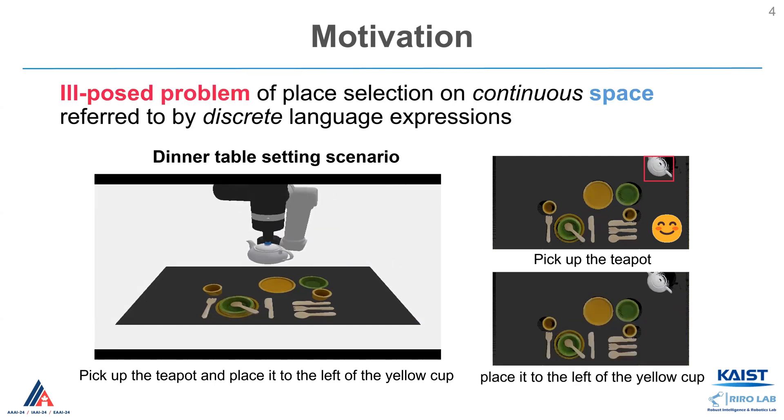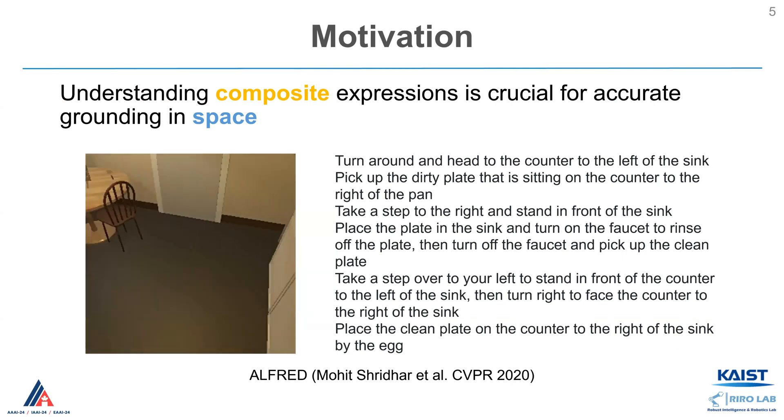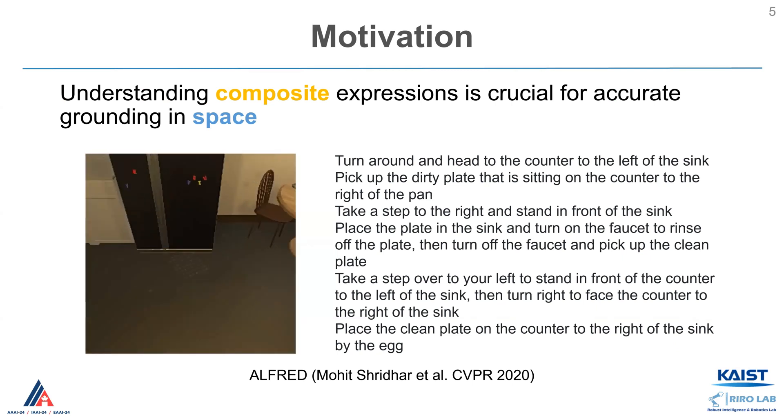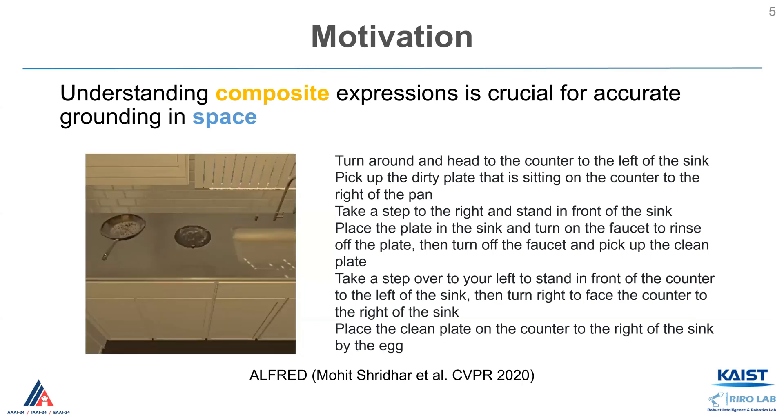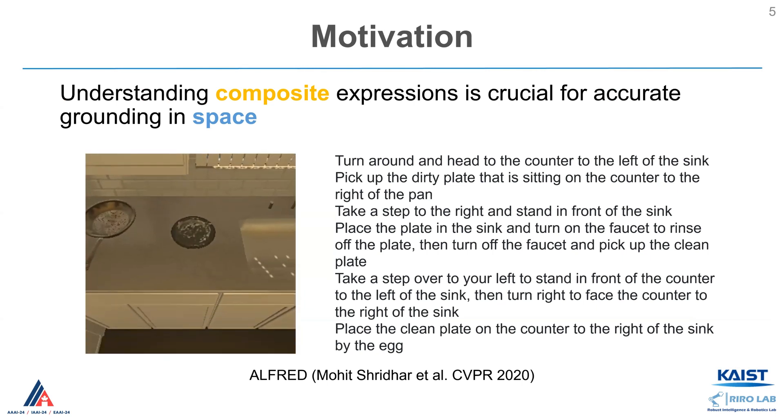Different from identifying objects, identifying space is challenging because it involves an ill-posed problem of place selection on continuous space referred to by discrete language expressions. Moreover, people widely use complex and composite instructions as shown in the video. Therefore, understanding composite expressions is important for accurate grounding.